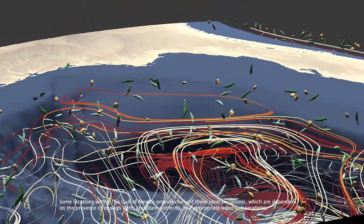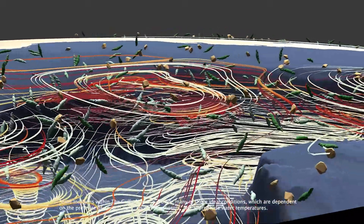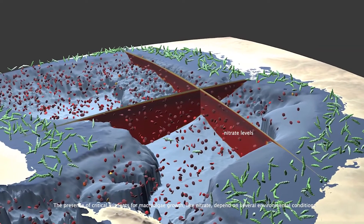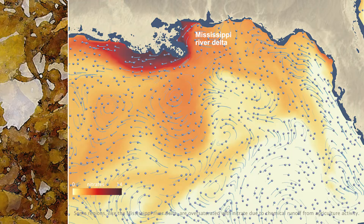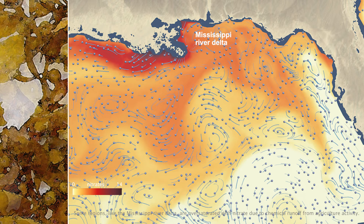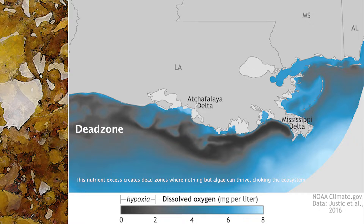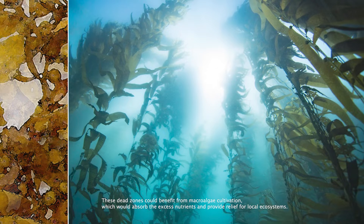Some locations within the Gulf of Mexico provide many of these ideal conditions, which are dependent on the presence of enough light, abundant nutrients, and appropriate water temperatures. Some regions, like the Mississippi River Delta, are oversaturated with nitrate due to chemical runoff from agricultural activity. This nutrient excess creates dead zones where nothing but algae can thrive, choking the ecosystem. These dead zones could benefit from macroalgae cultivation, which would absorb the excess nutrients and provide relief for local ecosystems.